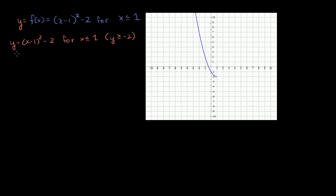If we add 2 to both sides of the equation, we get y + 2 = (x - 1)² - 2 + 2. So those cancel out, giving us y + 2 = (x - 1)².